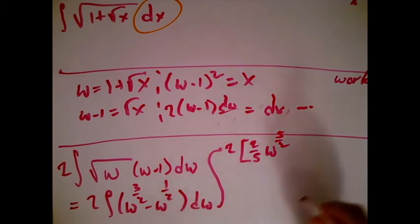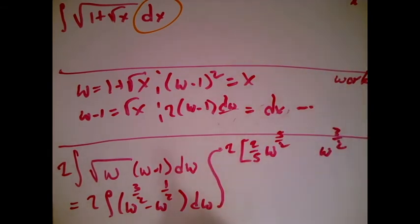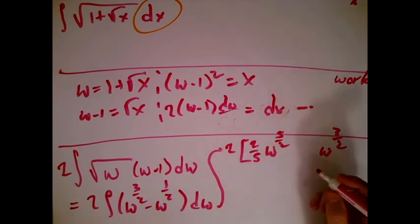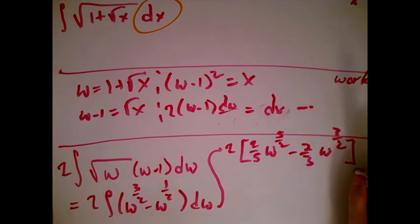I take w to the 1 half, I raise the power by 1. I know that's going to be w to the 3 halves. I'm next supposed to divide by 3 halves, but I multiply by 2 thirds instead. Now, we turn it into an anti-derivative we could do.